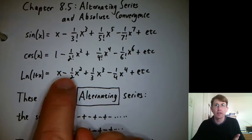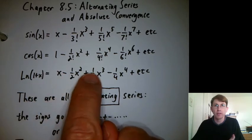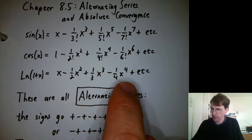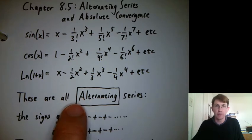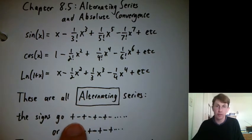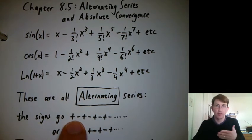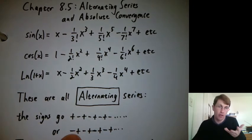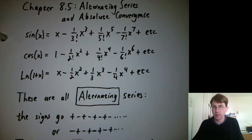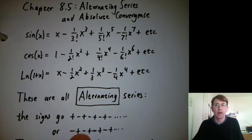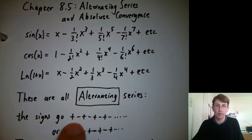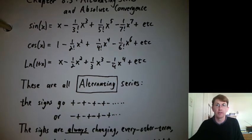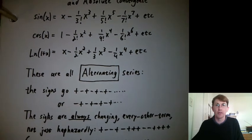And we notice we've always got this plus here, minus there, plus here, minus there, etc. So there's a special name for this. This is called an alternating series. It always has the signs, the plus and the minus, go plus, minus, plus, minus. Or these don't start with a minus, but you could start a series with a minus if you wanted.